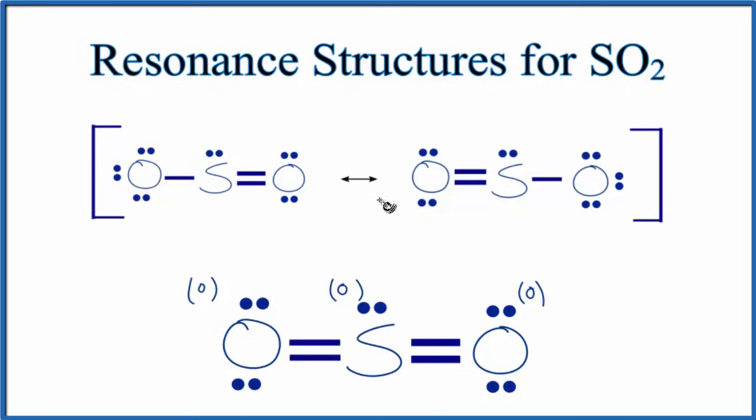So while these are resonance structures, they're really just one structure. They're not flipping back and forth. It's not an equilibrium.